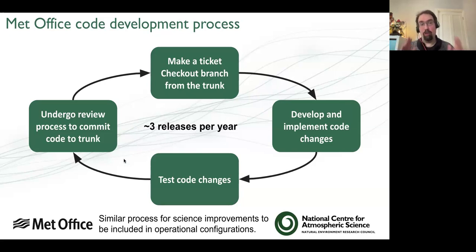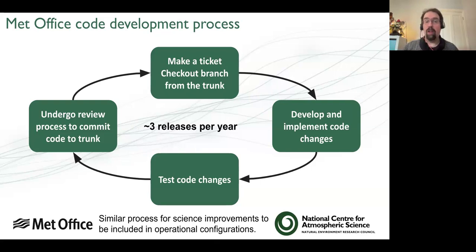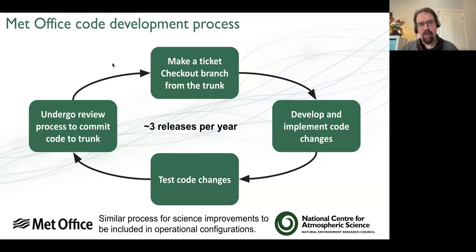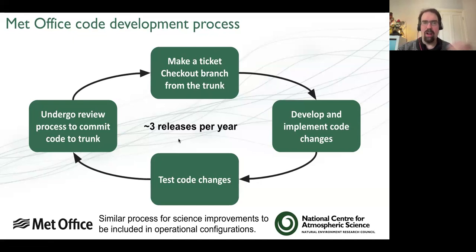There are about three releases a year, coming roughly every four months. We're literally just in the process of getting a new release at the moment. The code you'll be working with during these tutorials is equivalent to unified model version 13 - it might be 13.5 or 14. Once code is committed, you'd then make the next change from the latest version of the trunk to always try to keep up to date.